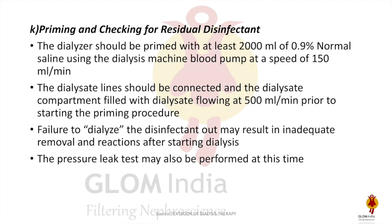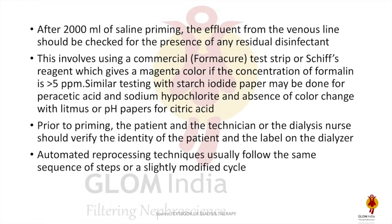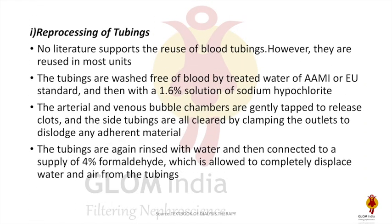A pressure leak test may also be performed at this time. After 2000 ml of saline priming, the effluent from the venous line should be checked for residual disinfectant using commercial test strips or Schiff's reagent, which gives a magenta color if formalin concentration is less than 5 ppm. Similar testing with starch iodine paper may be done for peracetic acid and sodium hypochlorite, and absence of color changes with litmus or pH paper for citric acid. Prior to priming, the technician or dialysis nurse should verify the identity of the patient and the label of the dialyzer.